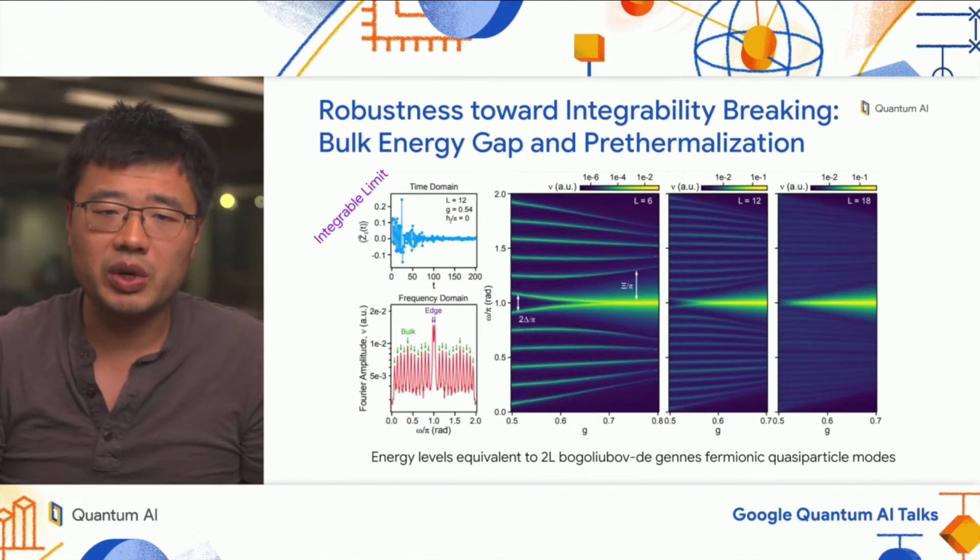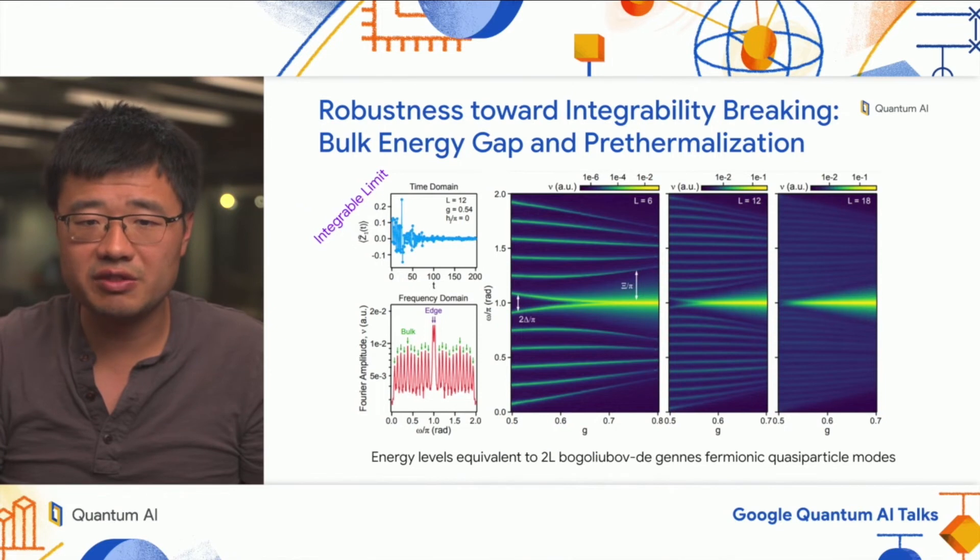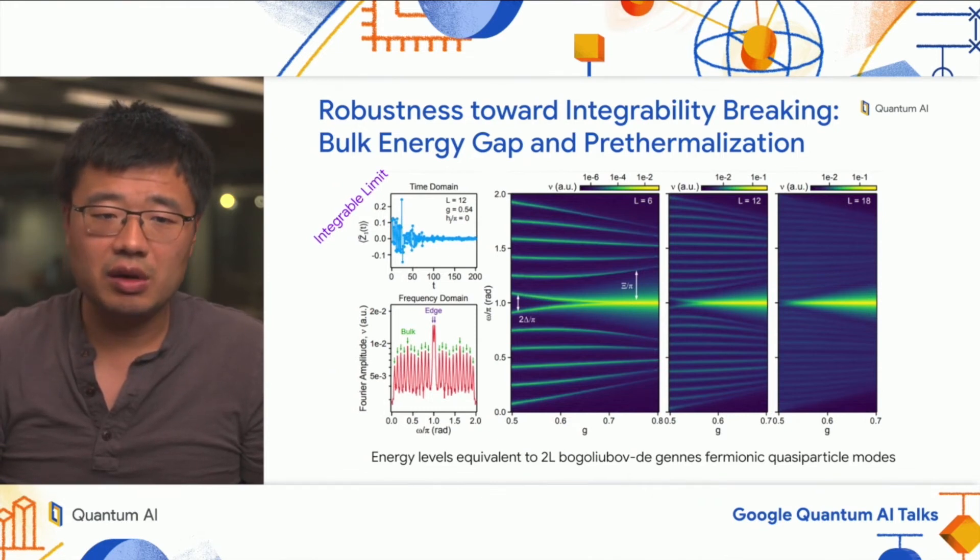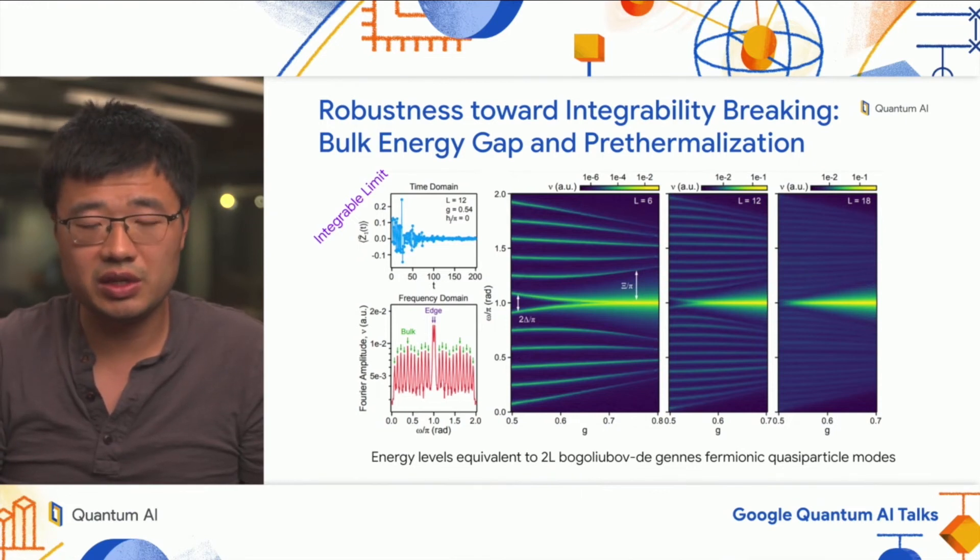To understand why this is so long-lived, we turn to the case where integrability is not broken. Here, you can characterize the single particle energy bands very accurately. You turn the local field H to zero, measure local observables as a function of time on the edge, and do a Fourier transform. You see a bunch of peaks. These peaks correspond to the single particle energy of the integrable system. Typically, you have low peaks corresponding to bulk modes and two tall peaks corresponding to edge modes.